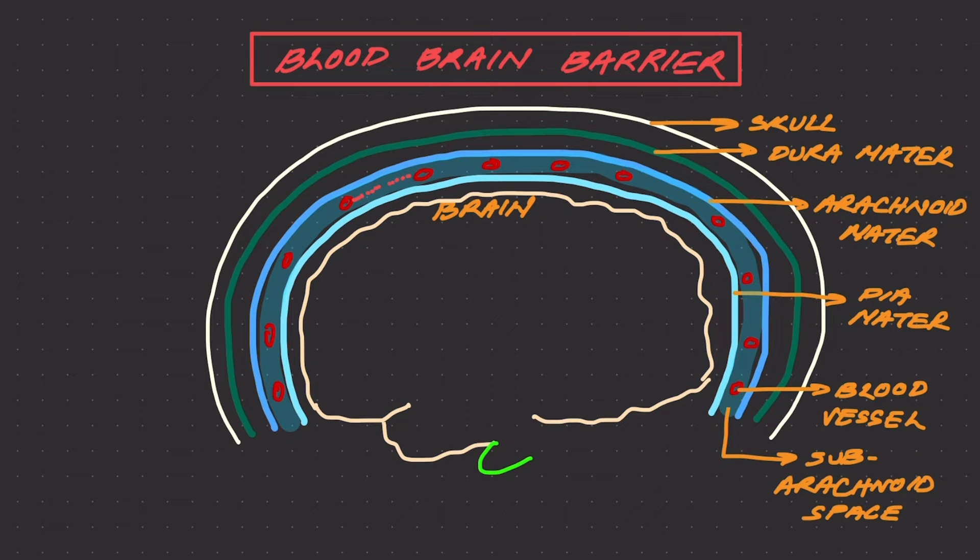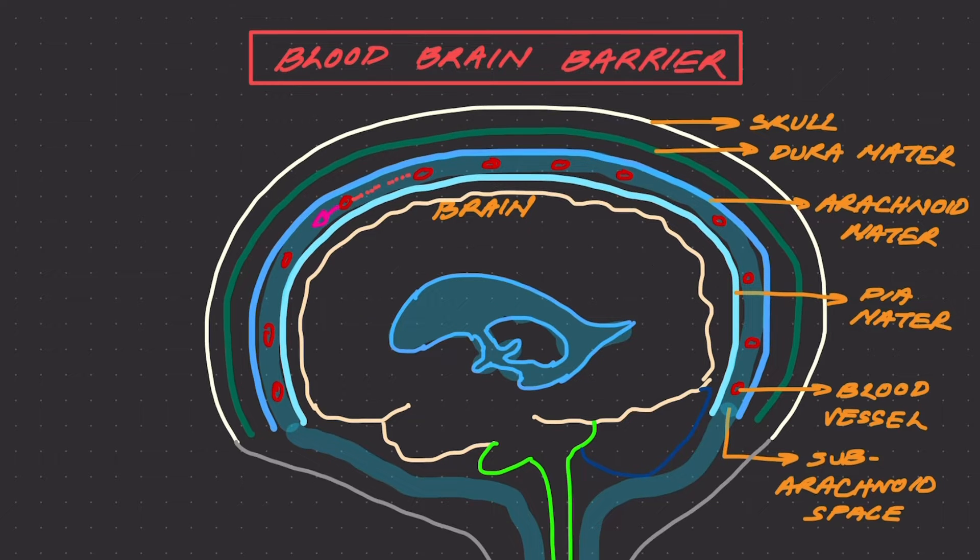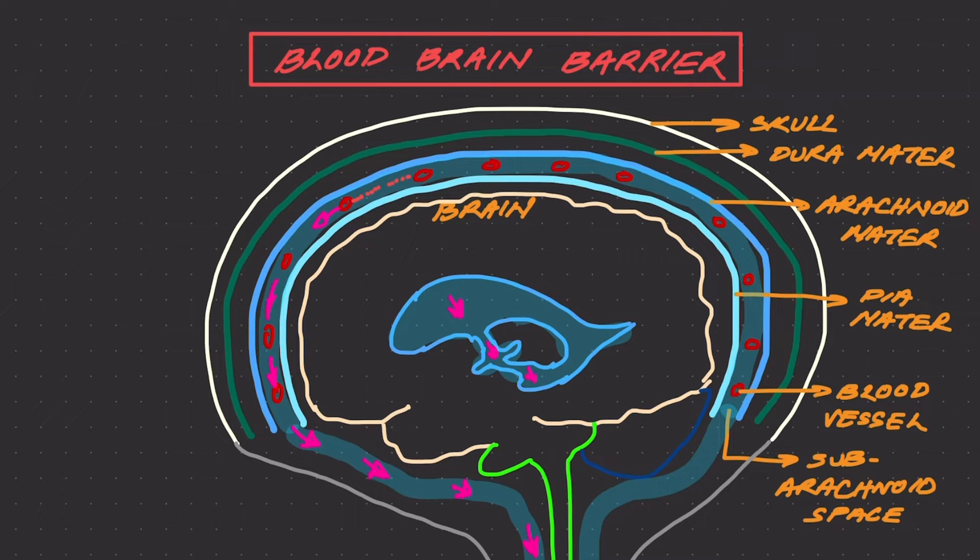CSF basically bathes the whole brain, and it carries its contents that the blood releases from the subarachnoid space to the brain, because the brain needs the nutrients that the blood carries. Brain just wants to make sure that it is only getting what it wants.